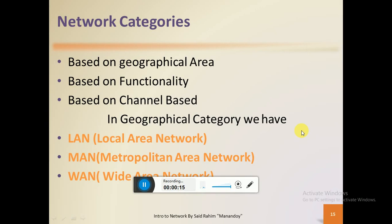Just to review the previous class: in the last class we talked about the definition of computer network. In short, connectivity between two or more computers, wired or wirelessly, in order to share resources is called a computer network. These resources can be software-based or hardware resources.